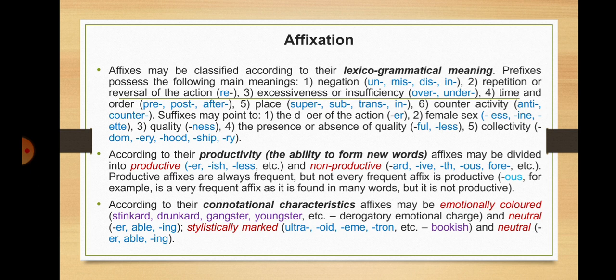According to their productivity — that is, the ability to form new words — affixes may be divided into productive and non-productive. Productive affixes are always frequent, but not every frequent affix is productive. For example, the suffix -ous is a very frequent affix as it is found in many words, but it is not productive. According to their connotational characteristics, affixes may be emotionally colored, that is having a derogatory emotional charge, or neutral; and stylistically marked or neutral.